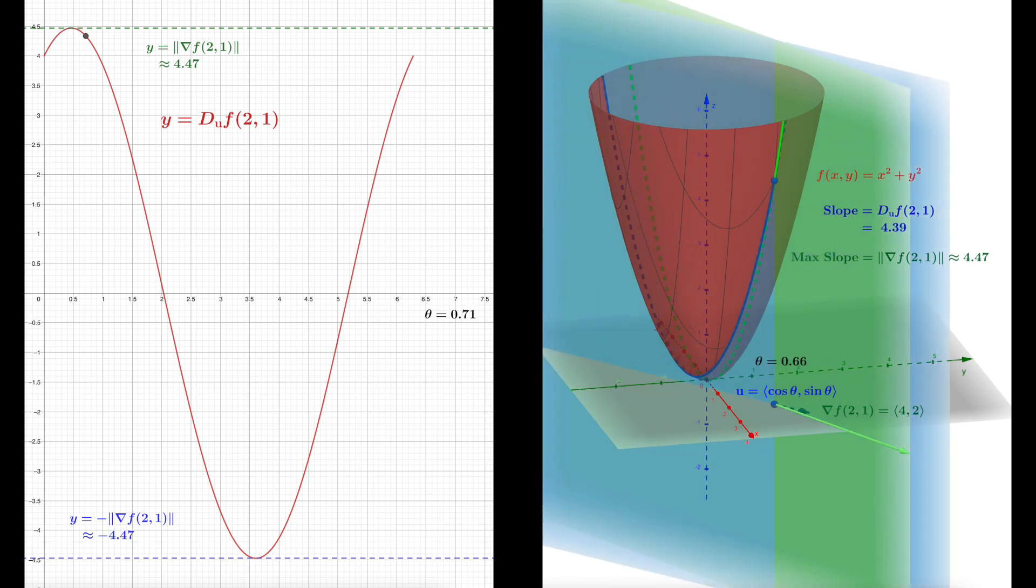So again, the gradient picks out what is the maximum rate of increase or the maximum rate of decrease. The values of those are going to be the length or magnitude of the gradient, or minus the length or magnitude of the gradient.